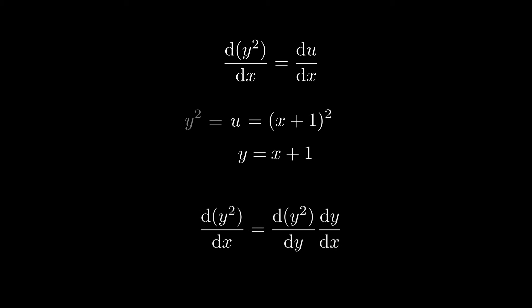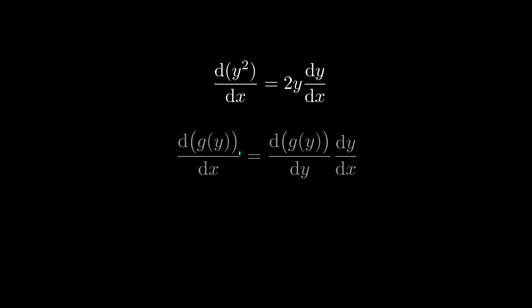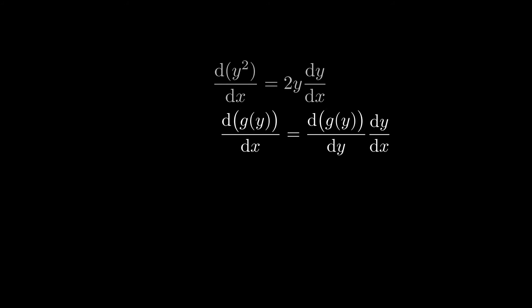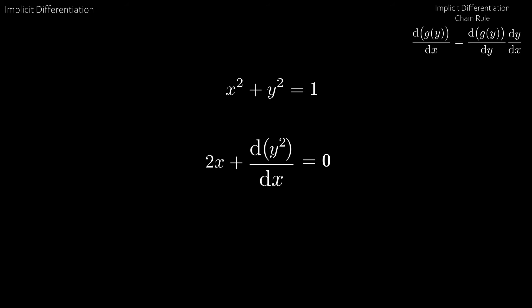Now replacing u with y squared gives us that the derivative of y squared with respect to x is equal to the derivative of y squared with respect to y times dy by dx. And now we can differentiate y squared with respect to y, leaving us with 2y times dy by dx. The general form of this is: if I want to differentiate a function of y with respect to x, we differentiate with respect to y first and then multiply by dy by dx. So going back to our old example, to find the derivative of y squared with respect to x, we take the derivative of y squared with respect to y and multiply by dy by dx. We know that the derivative of y squared with respect to y is 2y. And now all we do is rearrange for dy by dx, giving us the exact same answer as before.